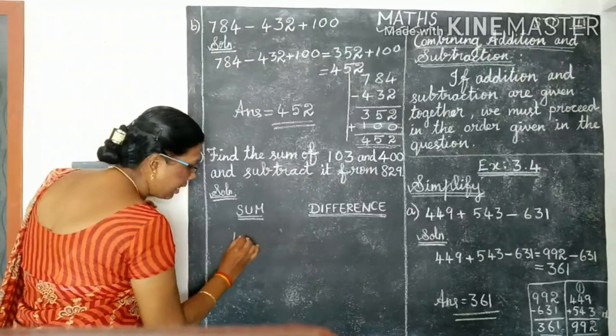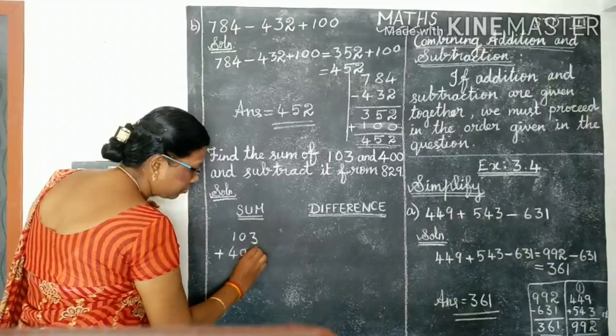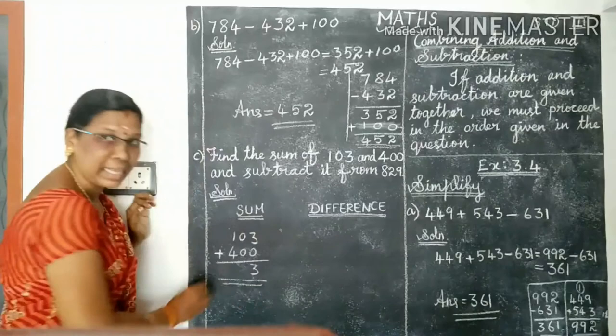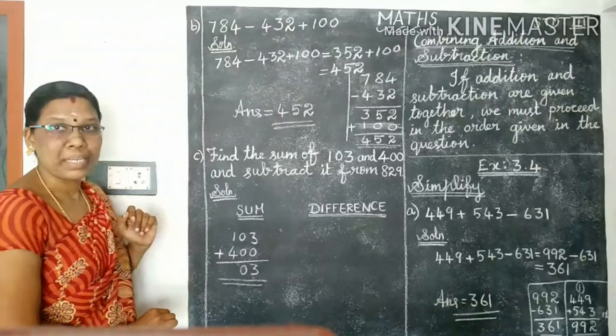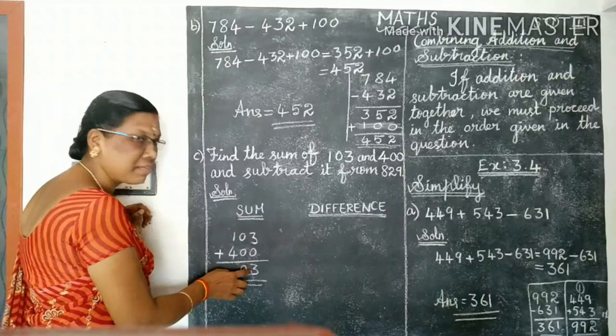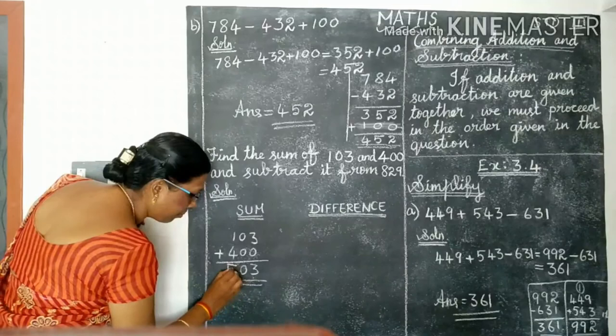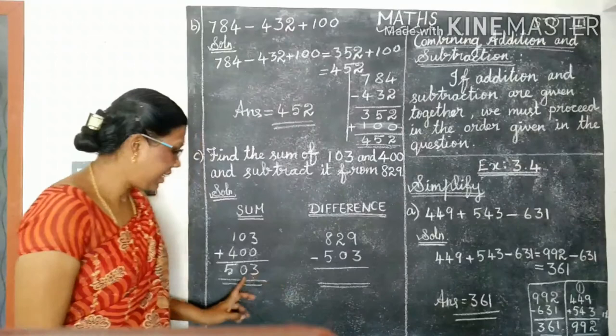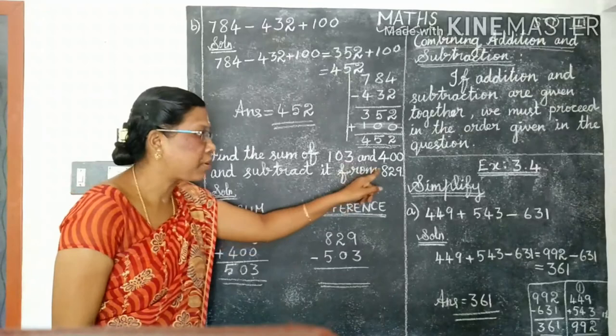First, find out the sum of 103 and 400. So find out the sum of 103 plus 400. Now add: 3 plus 0 is 3. 0 plus 0 is 0. We already know the properties of addition, isn't it? Any number add with 0 is the given number itself. 4 plus 1 is 5. We get the answer 503, isn't it?